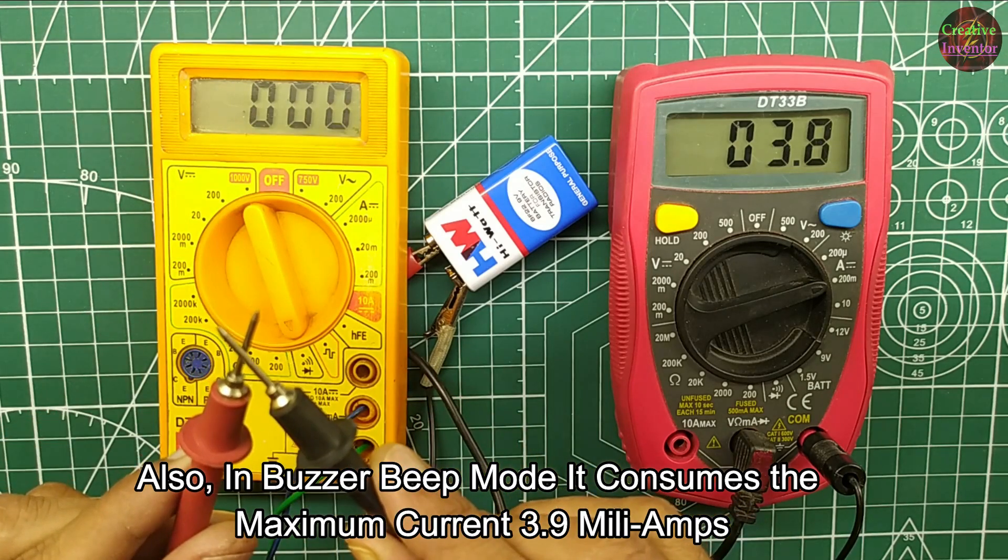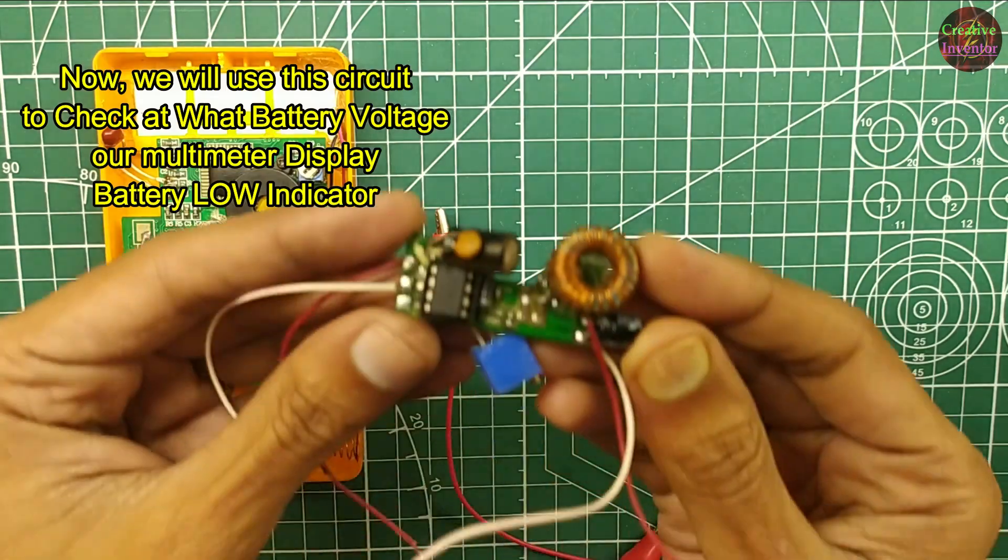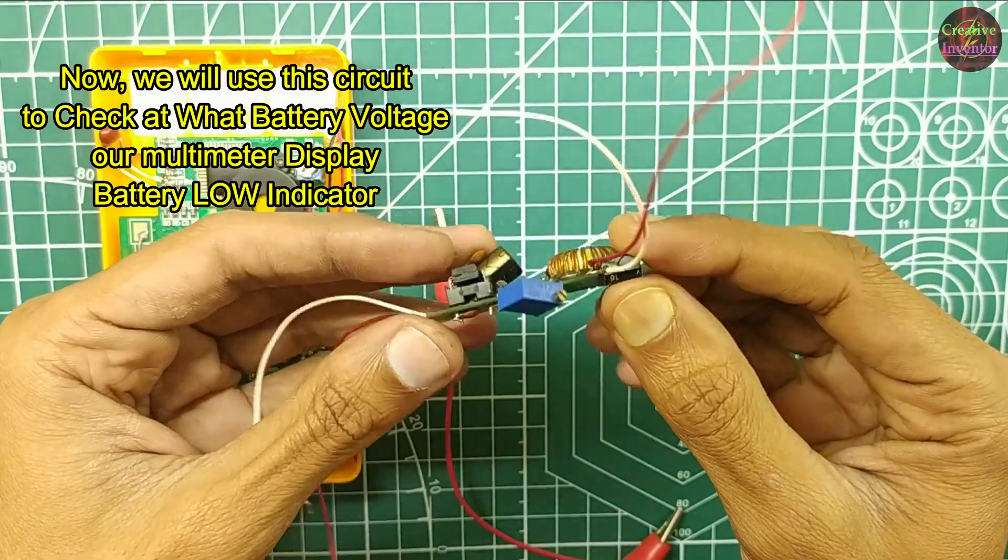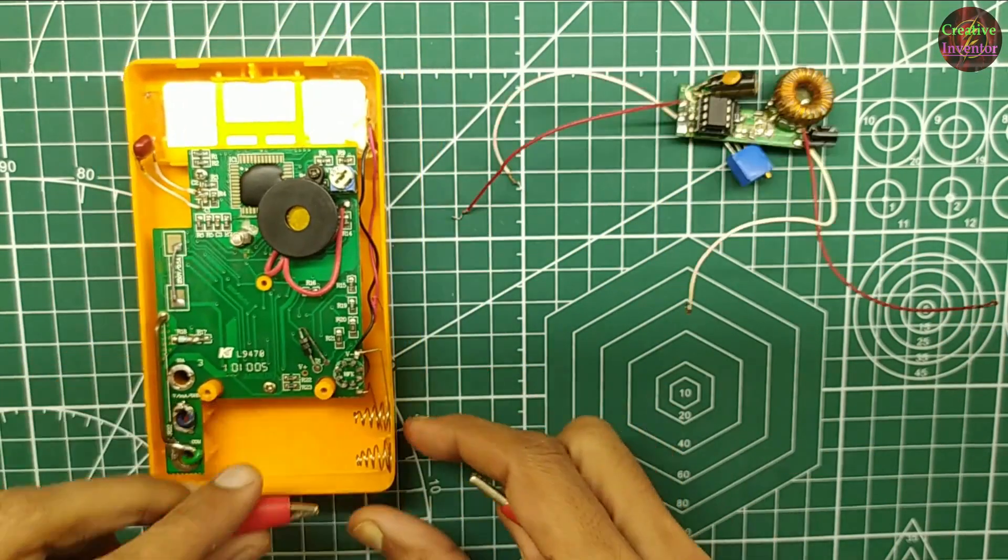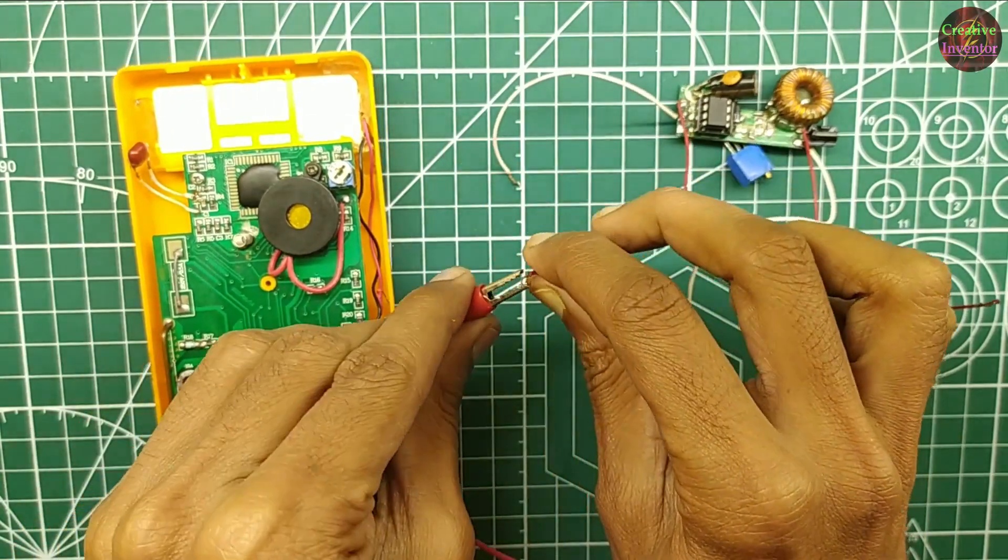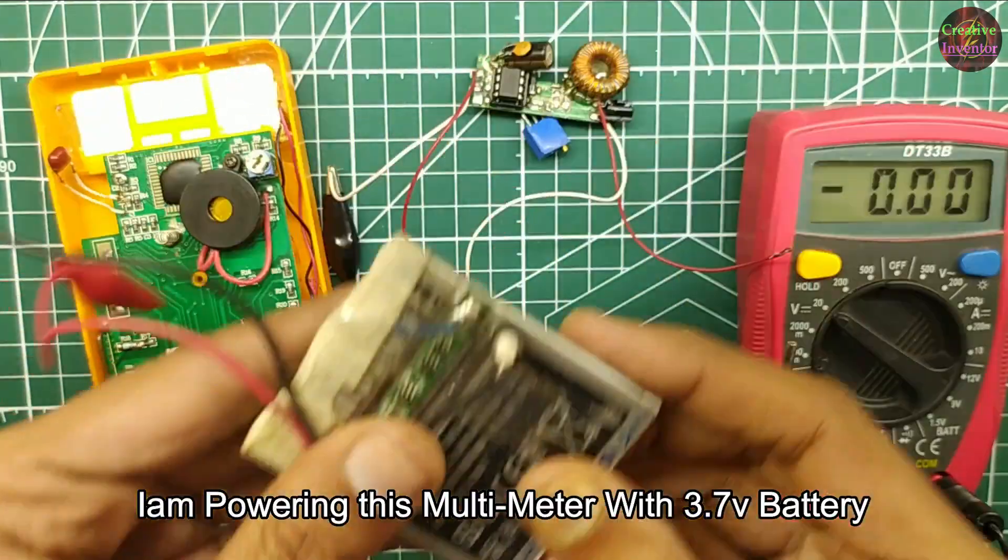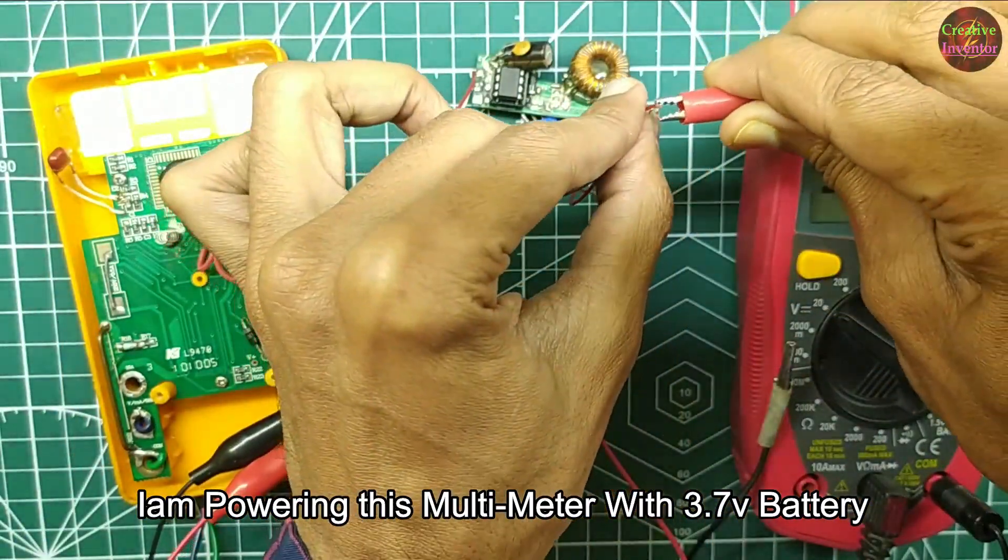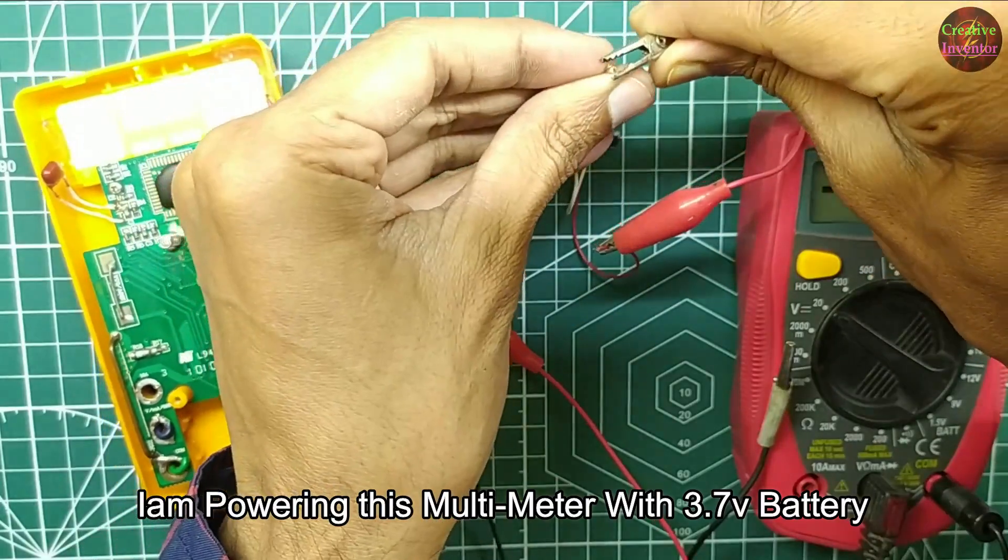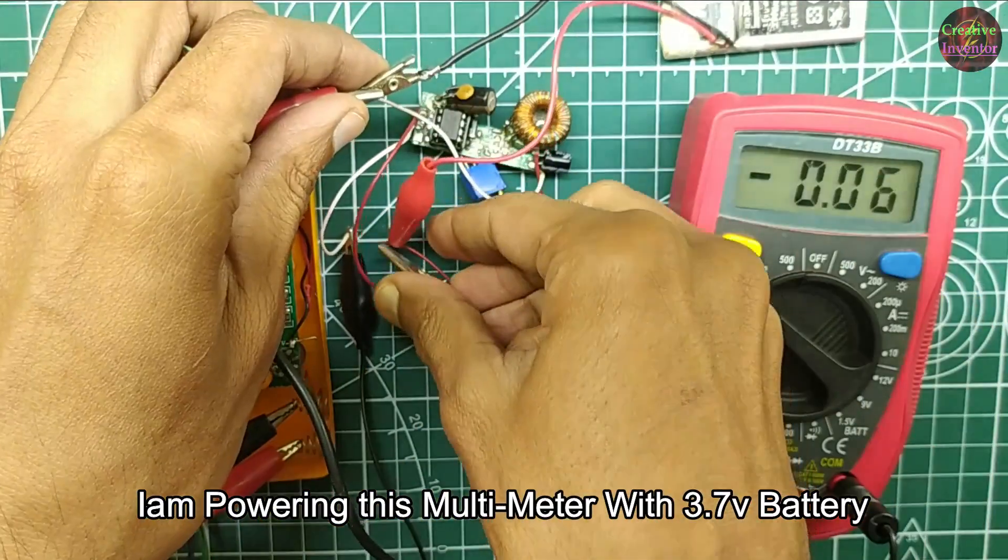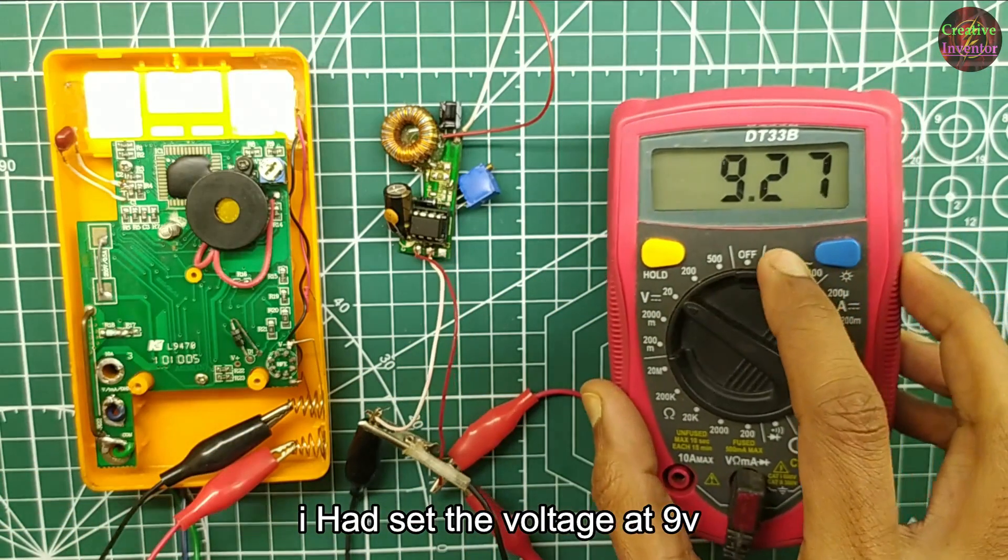Also in buzzer beep mode it consumes the maximum current, 3.9 milliamps. Now we will use this circuit to check at what battery voltage our multimeter displays battery low symbol. This circuit gives 3.7 volt to 15 volt output. I had set the voltage at 9 volt.